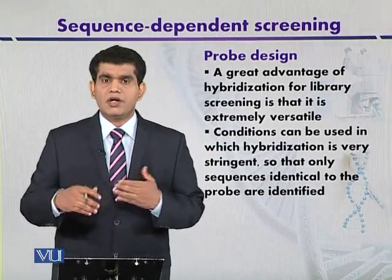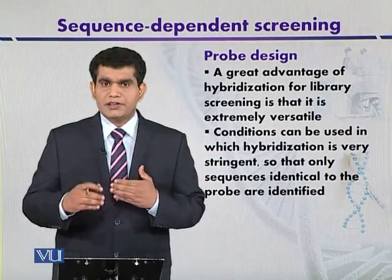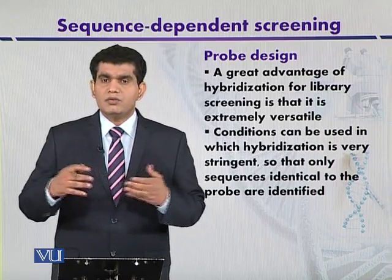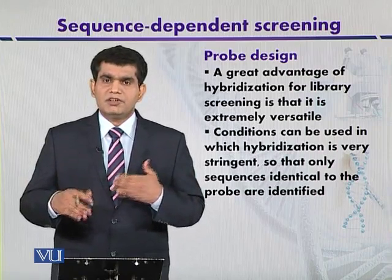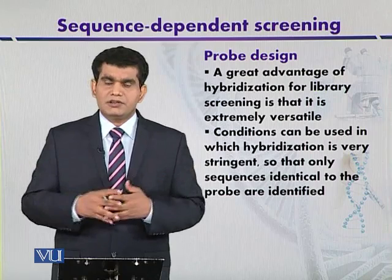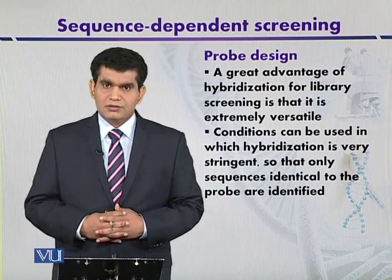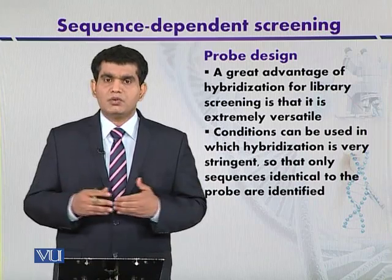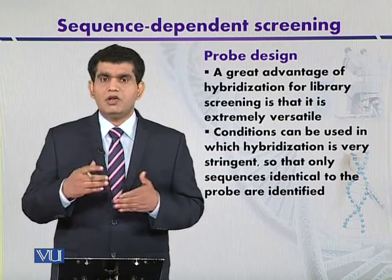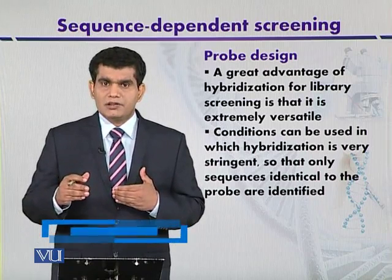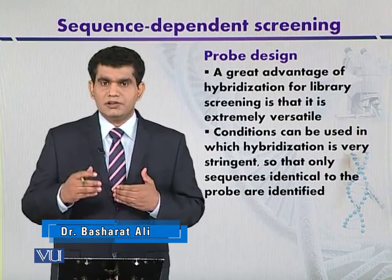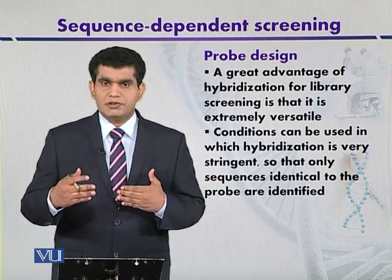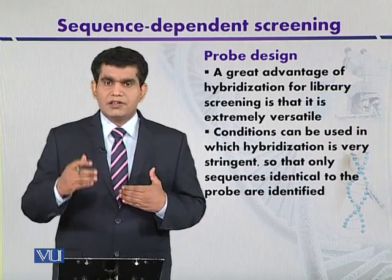Probe design for in-situ hybridization is very important in order to detect a target clone. To construct a probe, we must have information about the sequences of the target gene. A probe is a segment of DNA or oligonucleotide, variable in length — around 40, 100, or 1000 base pairs — and it is complementary to the target gene, used to detect it.